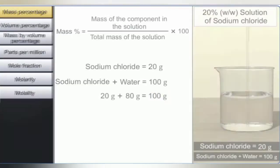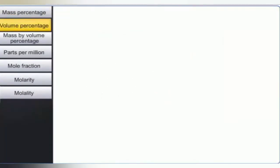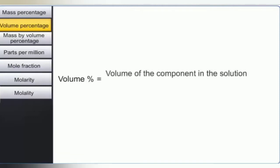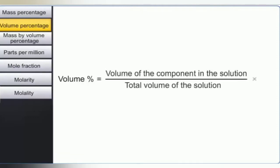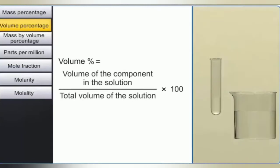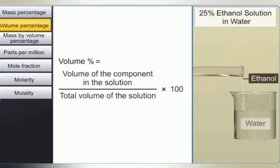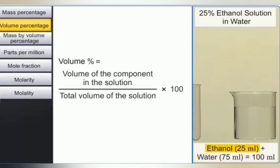Another way of expressing concentration in percentage is volume percentage, or volume by volume percentage. The volume percentage of a component in a solution is defined as the volume of the component divided by the total volume of the solution, multiplied by 100. This method is commonly used for solutions where both the solute and solvent are liquids. For example, 25% ethanol solution in water means 25 mL of ethanol is dissolved in 75 mL of water, giving a total volume of 100 mL.